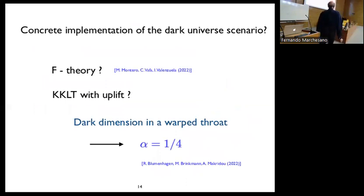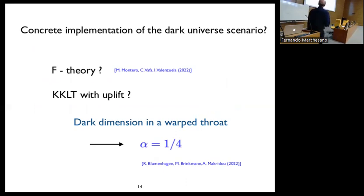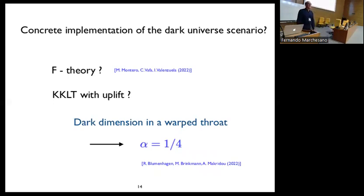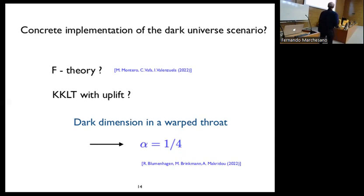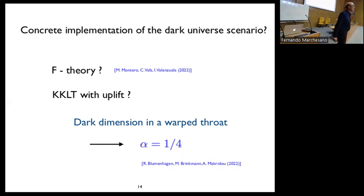One might ask whether there is any concrete implementation of the dark dimension in microscopic string compactifications. There are some remarks in the paper by Miguel and others. One can also ask whether this can be implemented in some KKLT-like model with an uplift — there is an interesting paper on the dark dimension in that context by Blumhagen, Max Brinkmann, and Andreana Magrido. They argue that if you do the uplift with an anti-brane, you precisely get the parameter alpha — determining the exponent — to be one quarter.